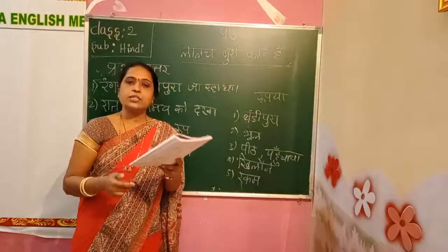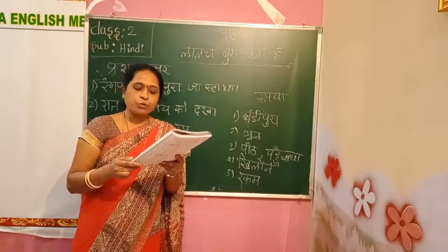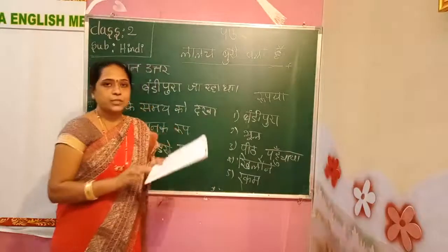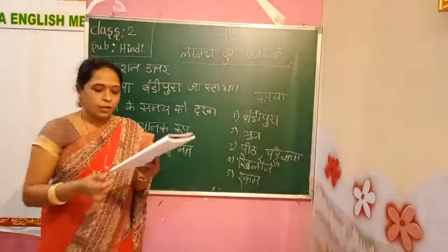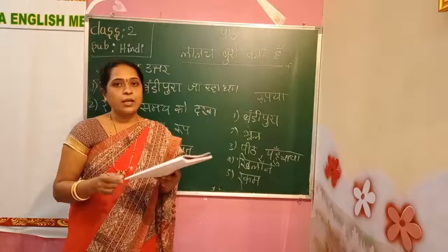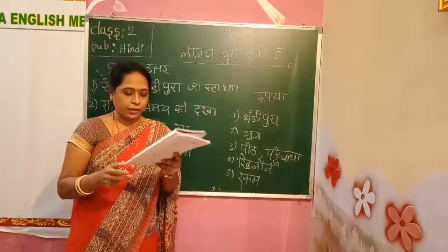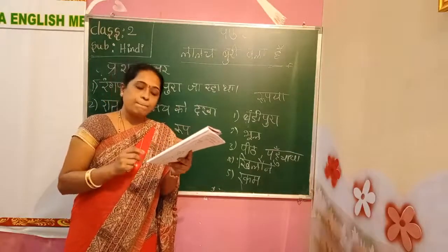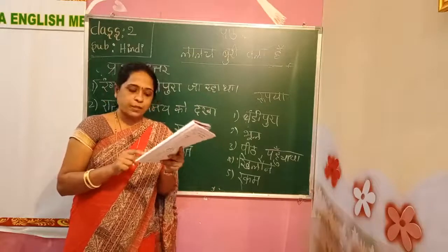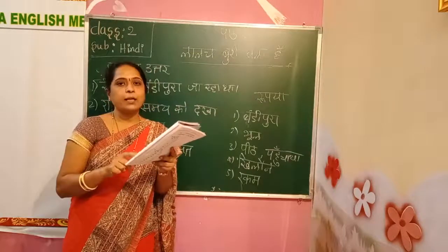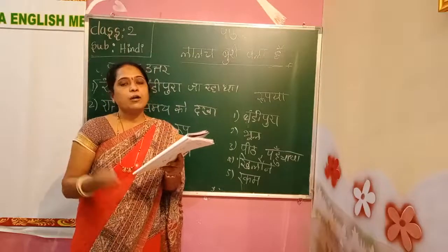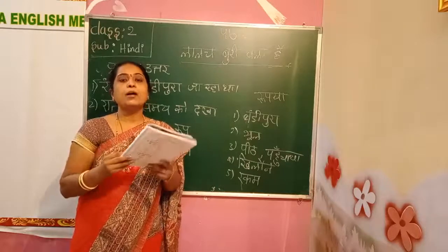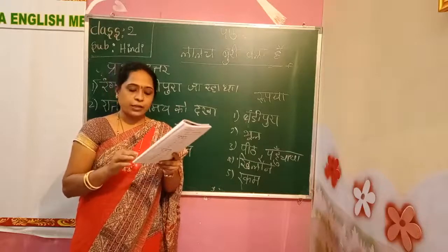Sahi shabd chulkar kali jagar bharo. Tum daro mat. Yahaan par do do words dheya gaya hai. Uus mein se aapko kaun sa sahi hai usko mark karke likna hai. First one — tum daro mat. Nahi, yamaat. Yahaan par kaun sa saka aapko choose karna hai — mat.